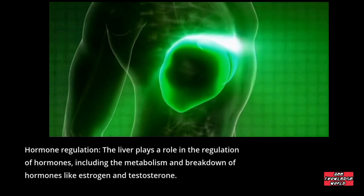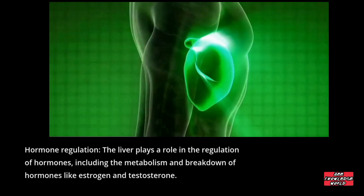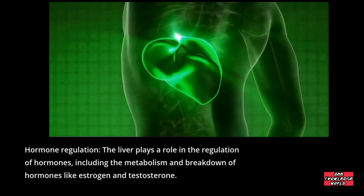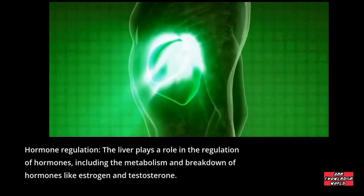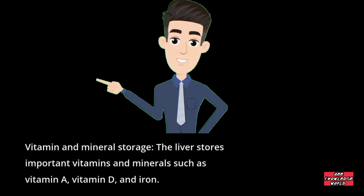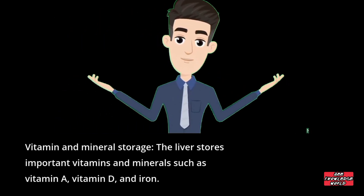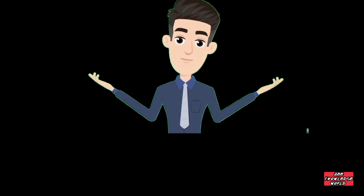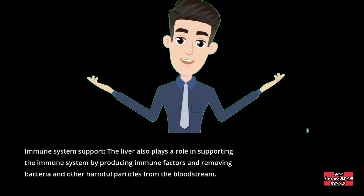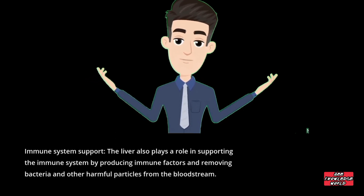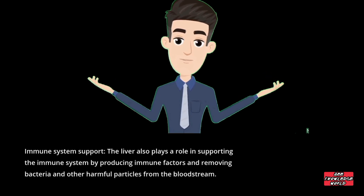Hormone regulation: the liver plays a role in the regulation of hormones, including the metabolism and breakdown of hormones like estrogen and testosterone. Vitamin and mineral storage: the liver stores important vitamins and minerals such as vitamin A, vitamin D, and iron. Immune system support: the liver also supports the immune system by producing immune factors and removing bacteria and other harmful particles from the bloodstream.